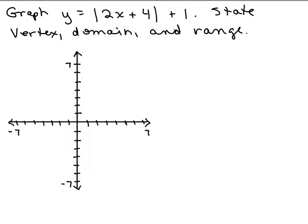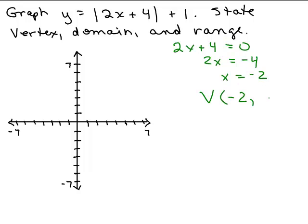Here's the next one to try. Why don't you put the video on pause and try this one on your own first? Let's start off with the vertex. Remember to get the x-coordinate, we take what's in the absolute value, which is 2x plus 4, and set it equal to 0. So we know that the x-coordinate of our vertex is negative 2.